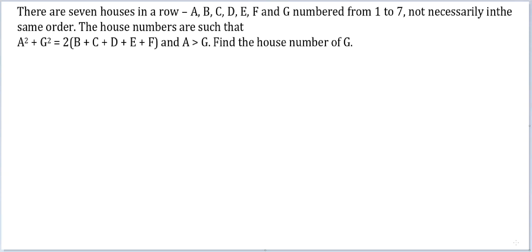Let's look at this question. There are 7 houses in a row: A, B, C, D, E, F, and G, numbered from 1 to 7, not necessarily in the same order. The house numbers are such that A² + G² = 2(B + C + D + E + F), and A > G. Find the house number of G.